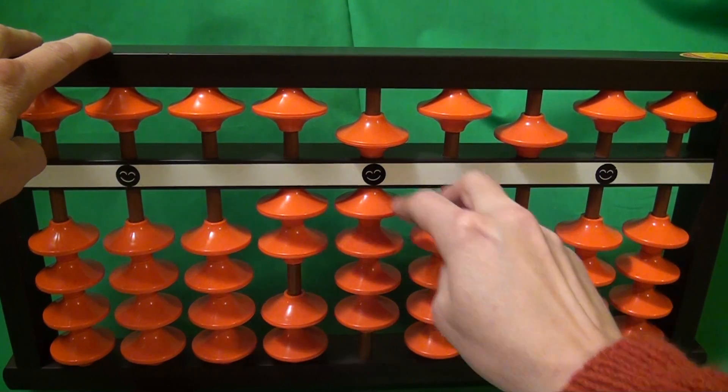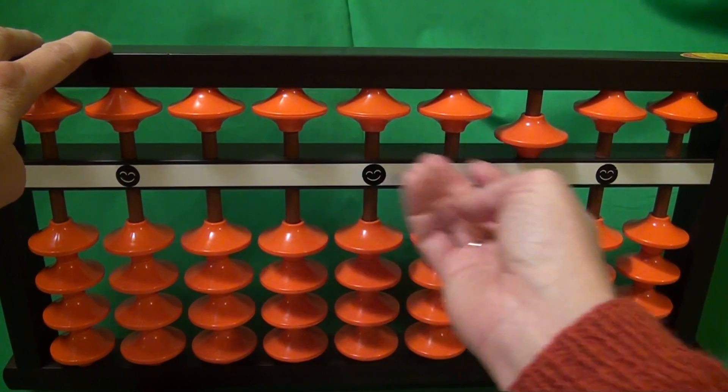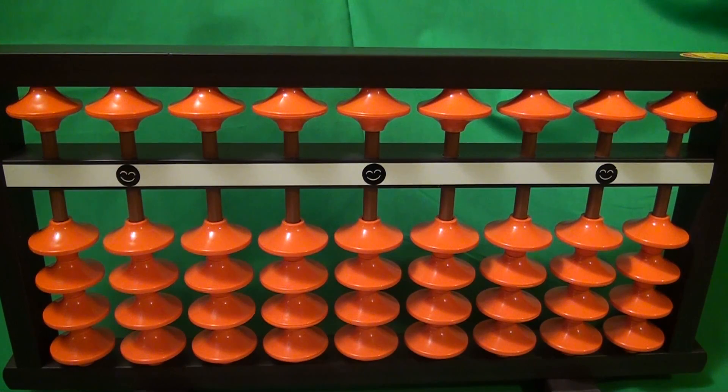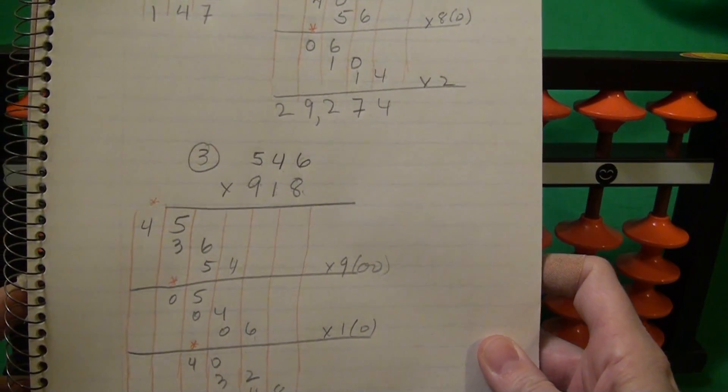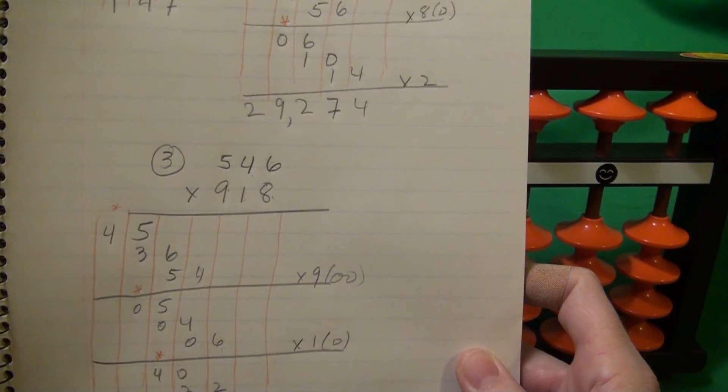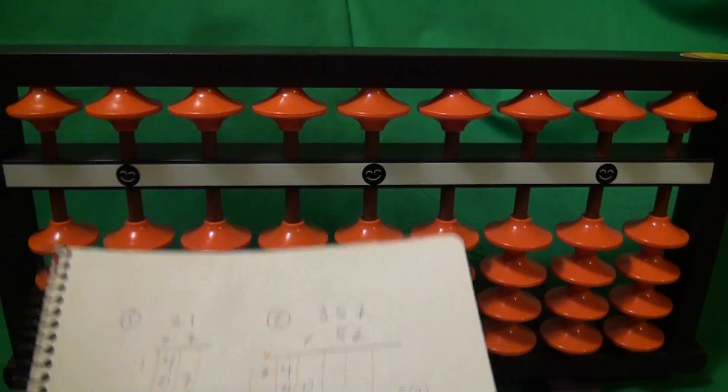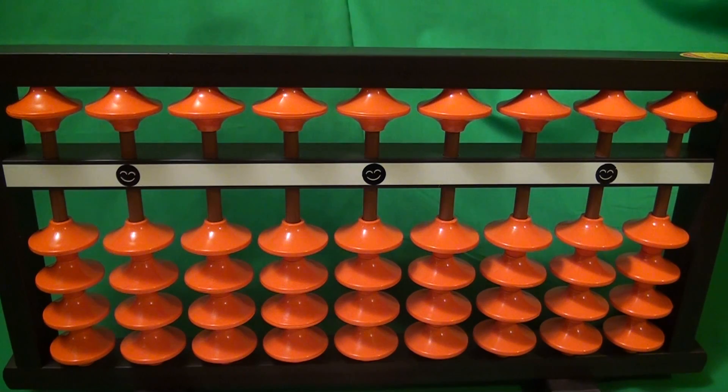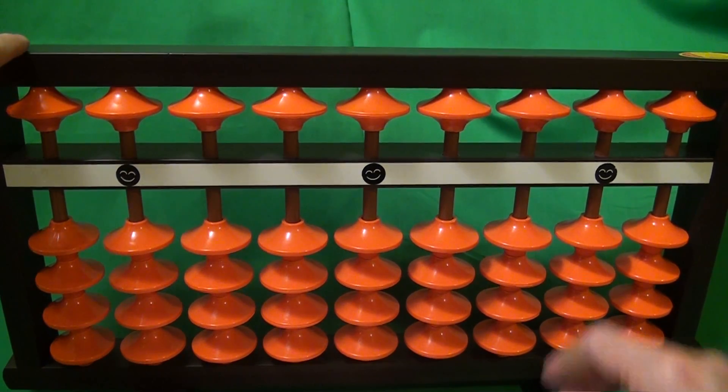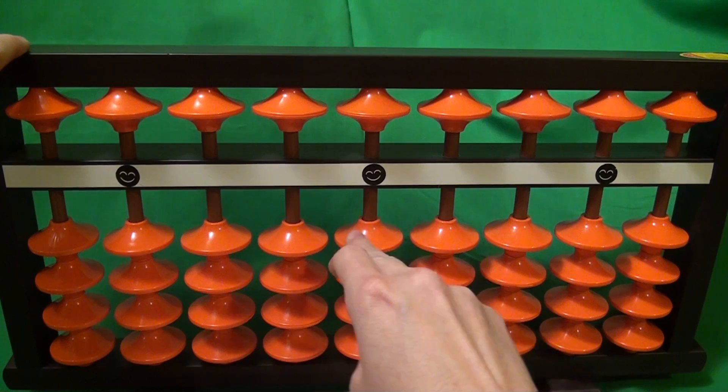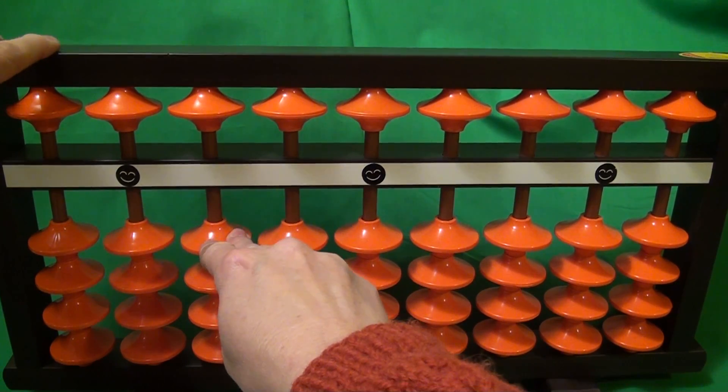And let's take a look at our third example, 3 digit by 3 digit. So our third example, 546 times 918. 3 digit times 3 digits, that's a total of 6 digits. So we have to move over here. 1, 2, 3, 4, 5, 6. We've got to start here.